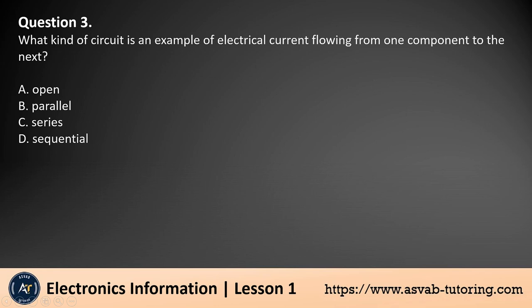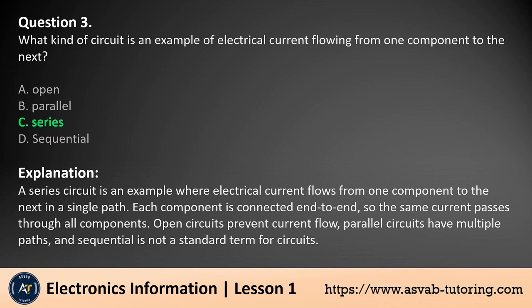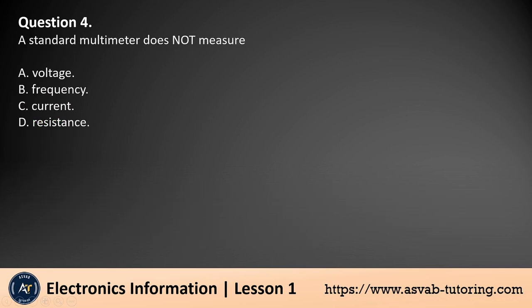Question 3. What kind of circuit is an example of electrical current flowing from one component to the next? a. Open, b. Parallel, c. Series, d. Sequential. The answer is c. A series circuit is an example where electrical current flows from one component to the next in a single path. Each component is connected end-to-end, so the same current passes through all components. Open circuits prevent current flow, parallel circuits have multiple paths, and sequential is not a standard term for circuits.